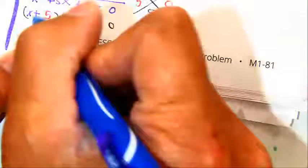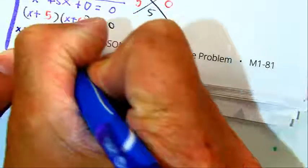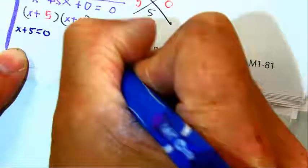Tell me what to write. X plus 5 equals 0. And? And then X plus 0 equals 0. Okay.